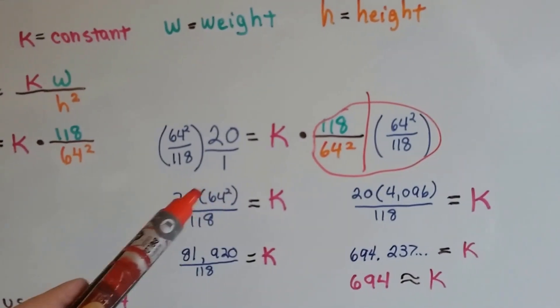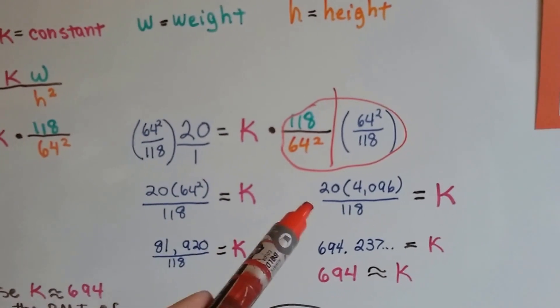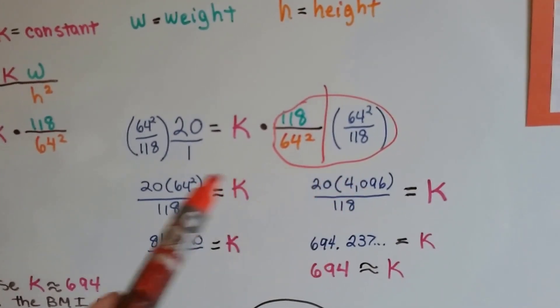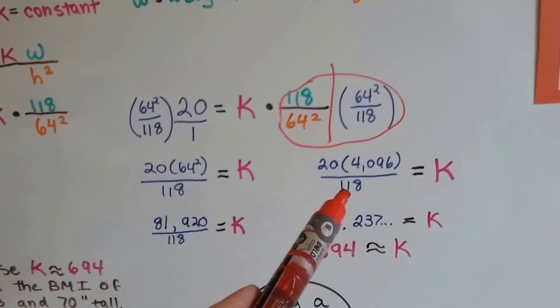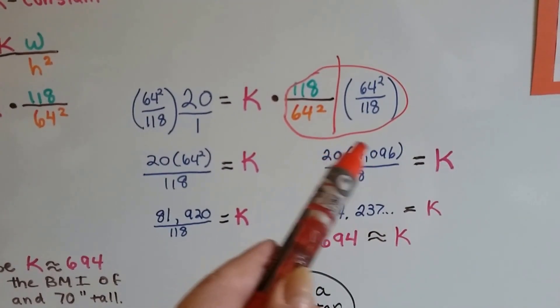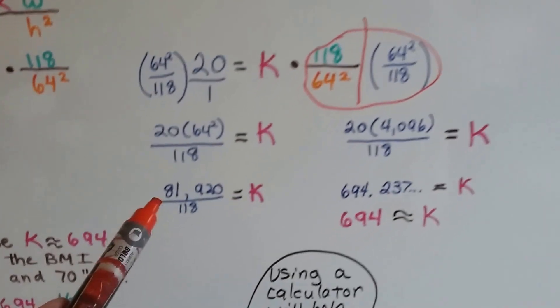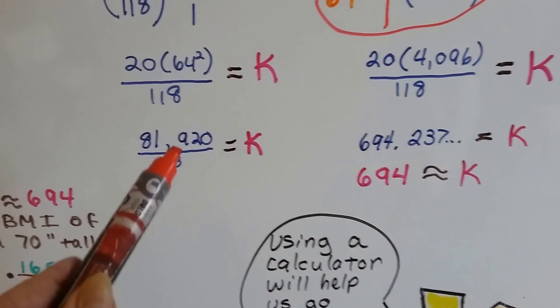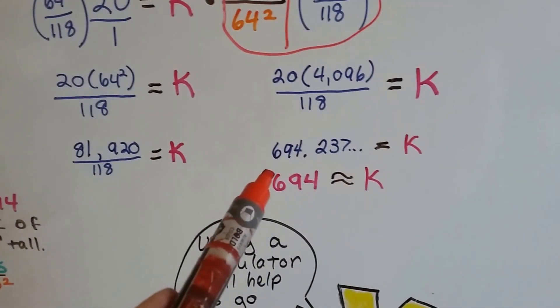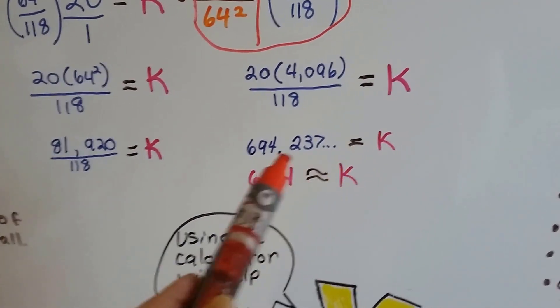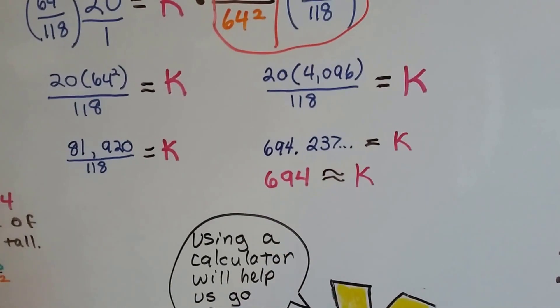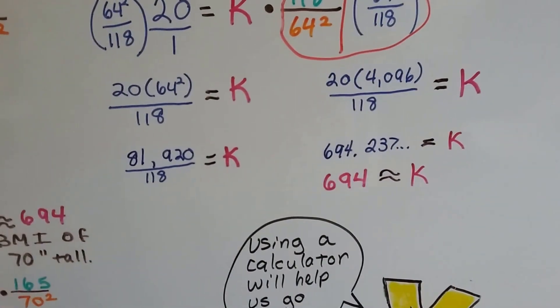20 times 64 squared divided by 118 ends up being 20 times 4096, that's what 64 times 64 is, divided by 118. We multiply these two together and we get 81,920 divided by 118. Use our calculator and we end up with a long decimal, but we round it off to 694. So we're going to use 694 as the approximation for K.